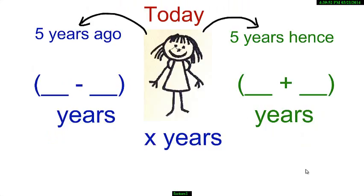Now suppose my two friends speak only algebra. My first friend says, today I am x years old. How old was I 5 years ago? How old will I be 5 years hence or 5 years from now?